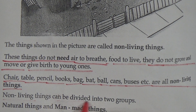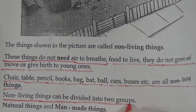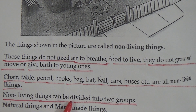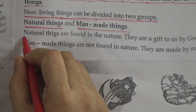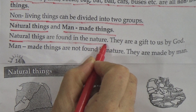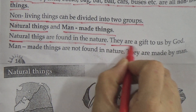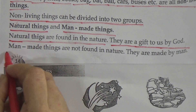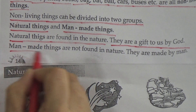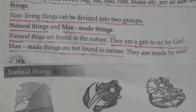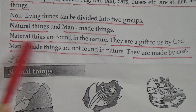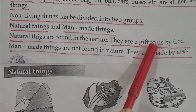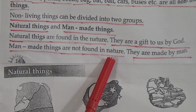Non-living things can be divided into two groups — this is a very important line. Non-living things are divided into two groups: natural things and man-made things. Natural things are found in nature — they are a gift to us by God. Man-made things are not found in nature — they are made by people.